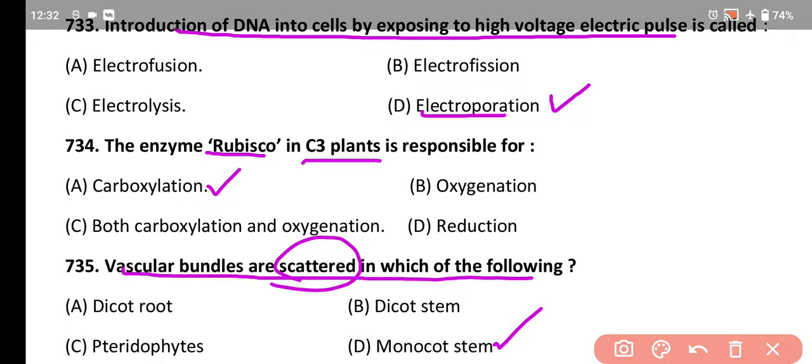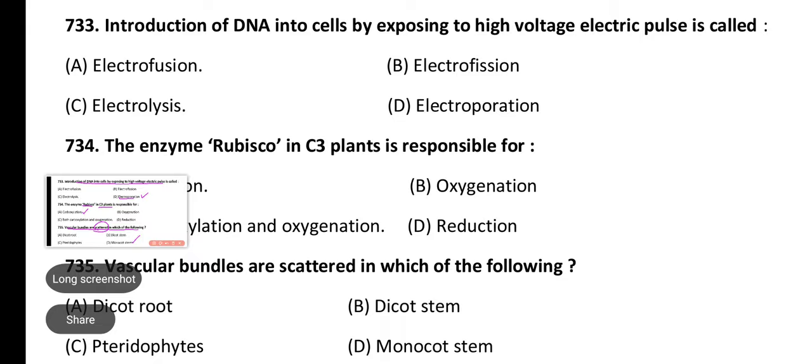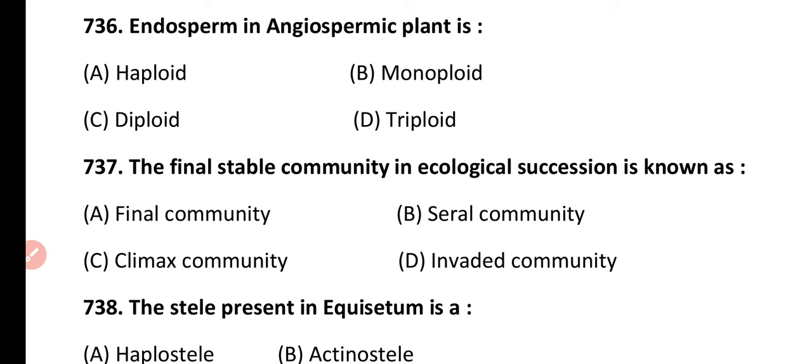Question 736. Endosperm in an angiospermic plant is: haploid, monoploid, diploid, or triploid. Correct answer is option D. Endosperm of an angiospermic plant is triploid.